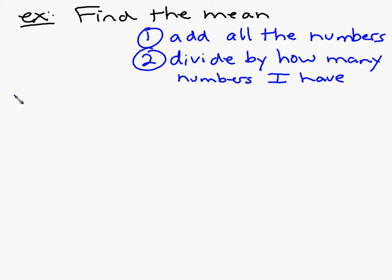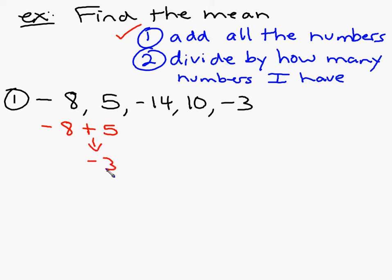So the difference now is we're going to have some integers we're finding the average of. So let's do one of these. Let's say they give you a list of numbers like this: negative 8, 5, negative 14, 10, and negative 3. So the first thing I have to do is add all the numbers. So don't do this all in your head and get it wrong. The first thing I do is negative 8 plus 5. What's negative 8 plus 5? Negative 3. What's negative 3 plus negative 14? Negative 17. Don't get ahead of yourself. One little mistake can mess up the whole problem on this.